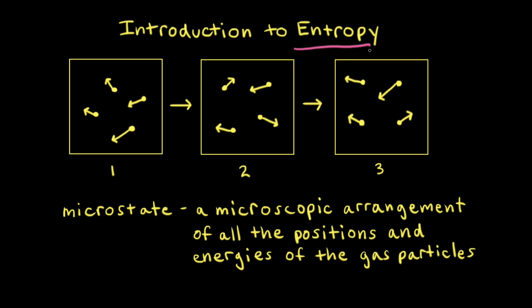The concept of entropy is related to the idea of microstates. To think about microstates, let's consider one mole of an ideal gas — n represents moles — at a specific pressure, volume, and temperature. If the system of gas particles is at equilibrium, then the pressure, the volume, the number of moles, and the temperature all remain the same. So from a macroscopic point of view, nothing seems to be changing.